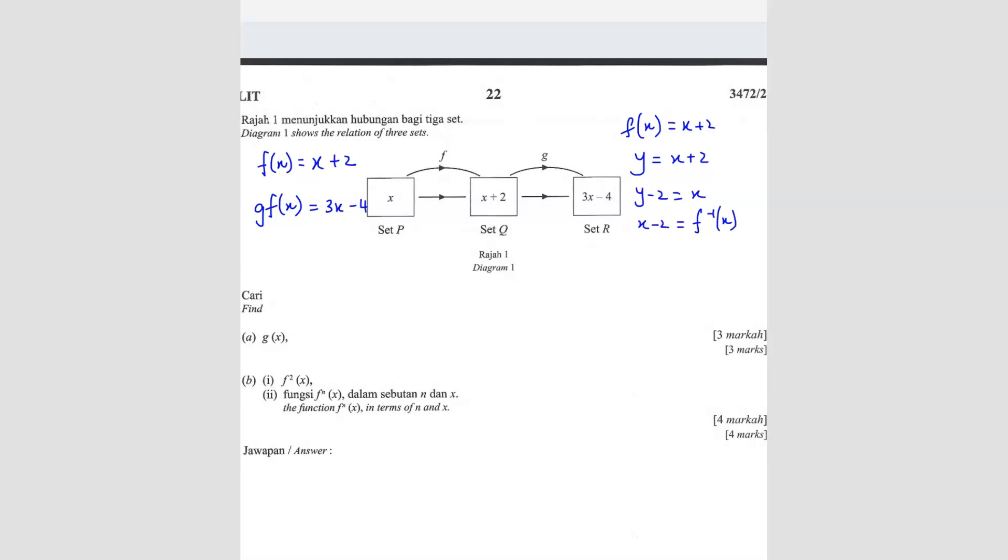So now you've got the inverse function. So you just have to substitute into the gfx. So it's going to be gf and then f inverse x. So where is your gf? So gf is what? 3x minus 4, right? But instead of writing x, you have to write the f inverse. So it's going to be 3 times x minus 2 minus 4.